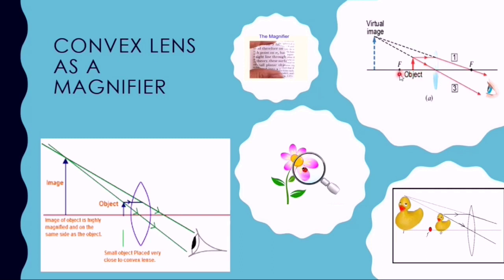The first ray is parallel to the principal axis. After passing through the convex lens, it converges and passes through the principal focus. The second ray passes through the optical center of the lens and remains undeviated.